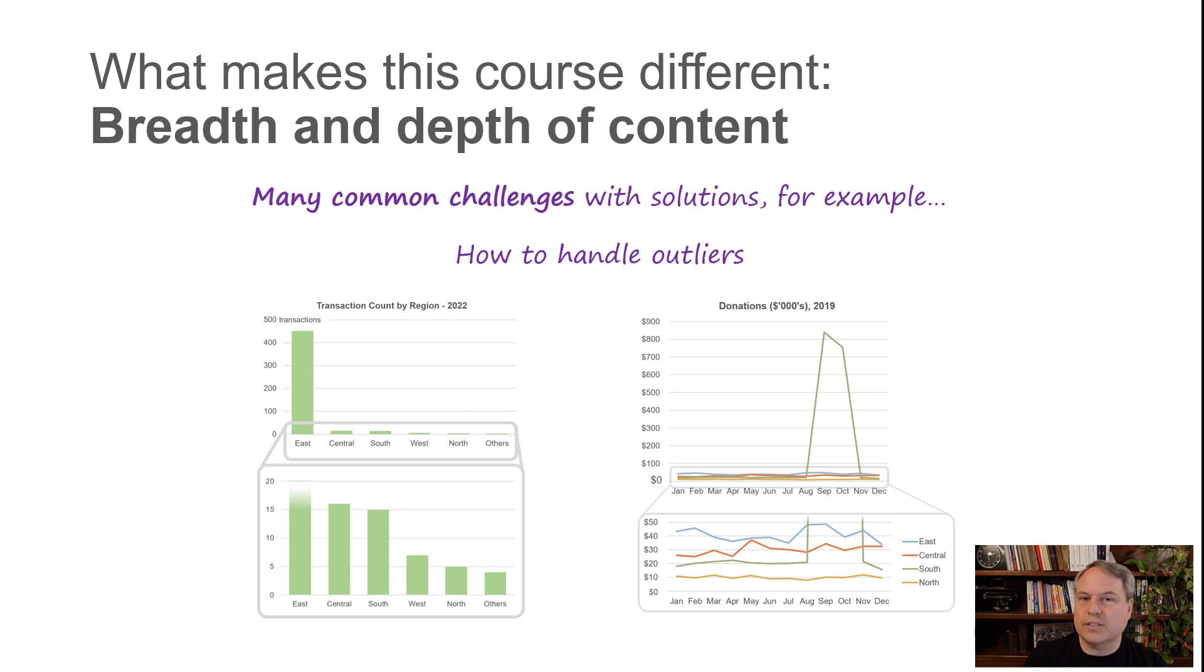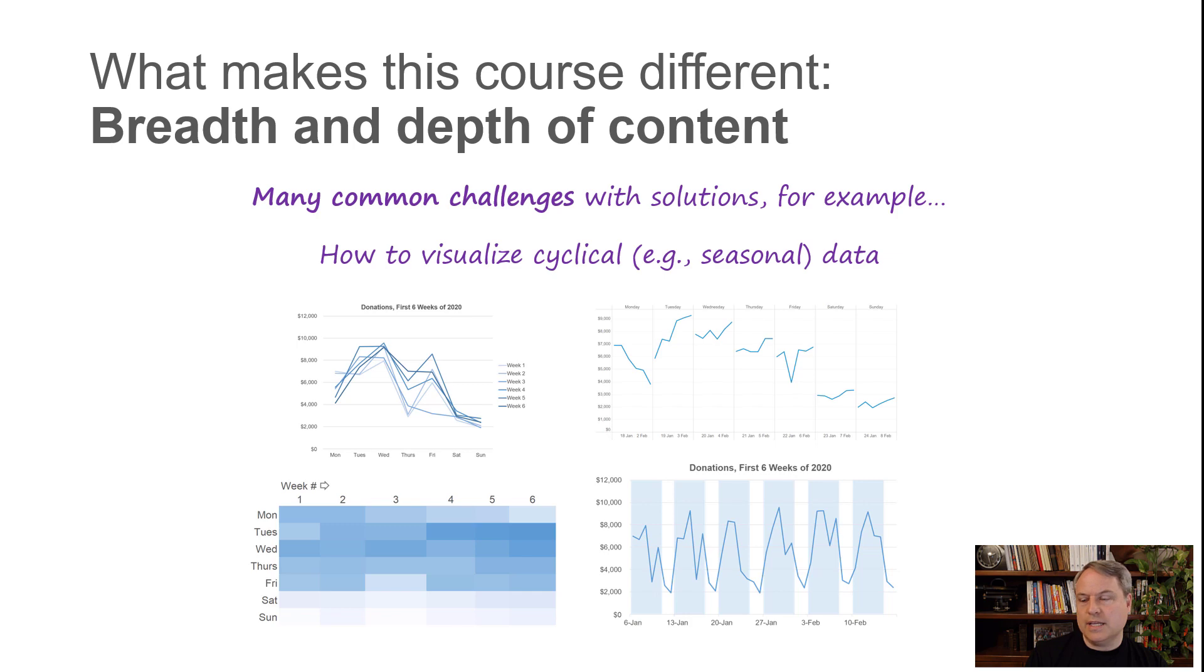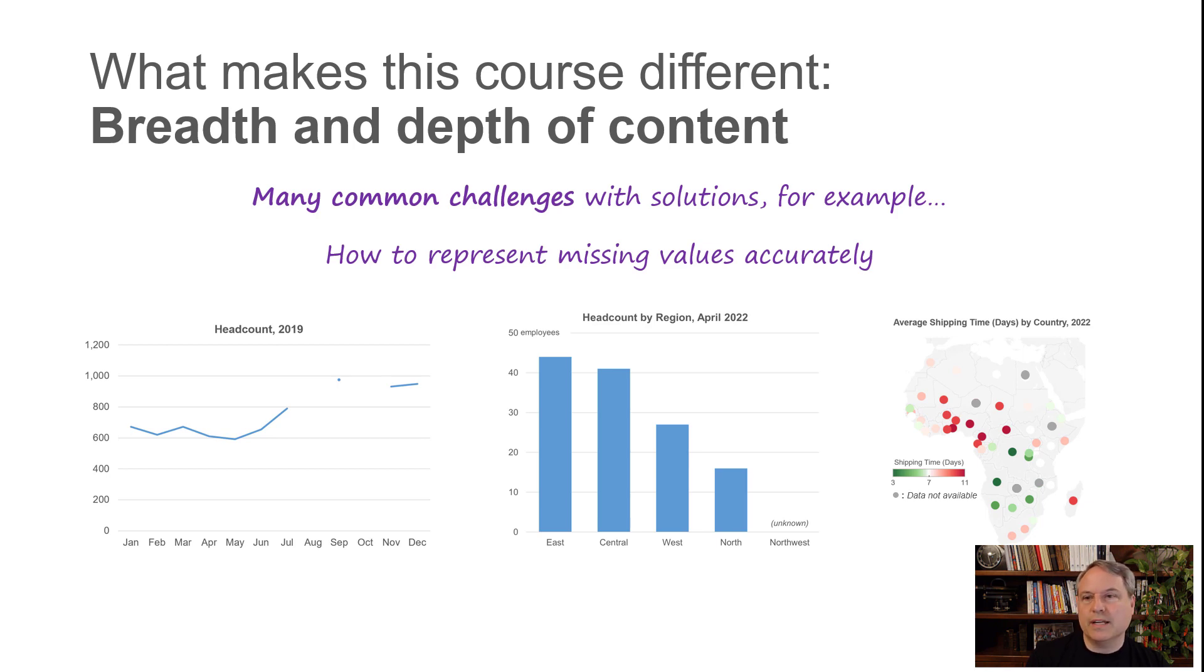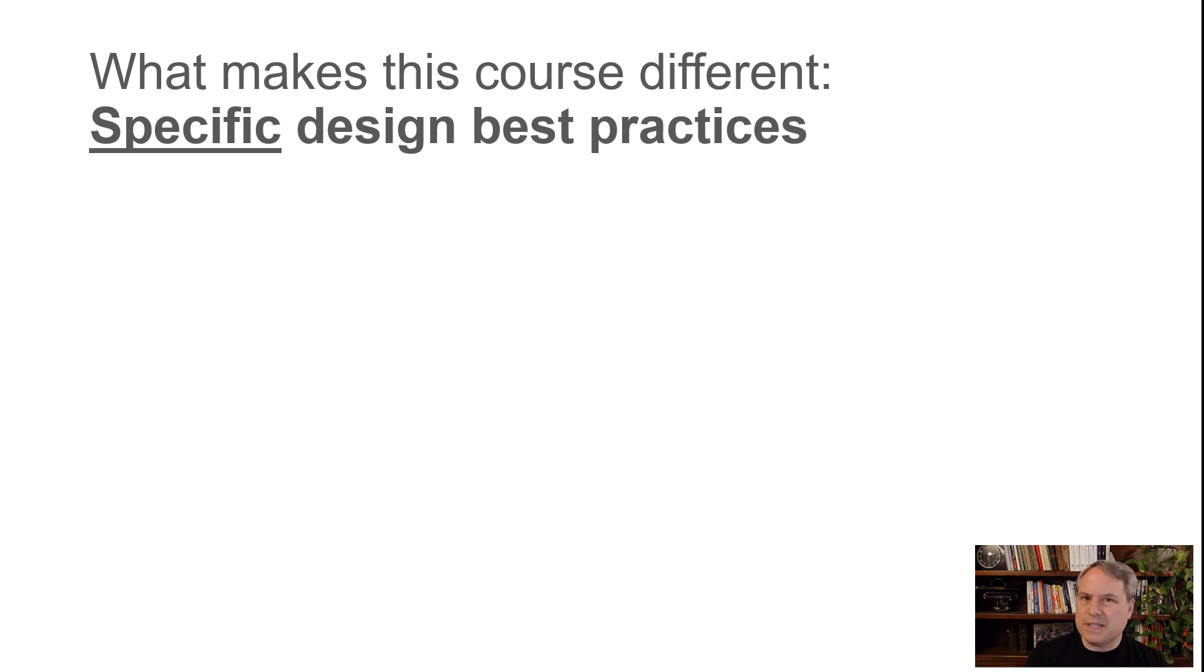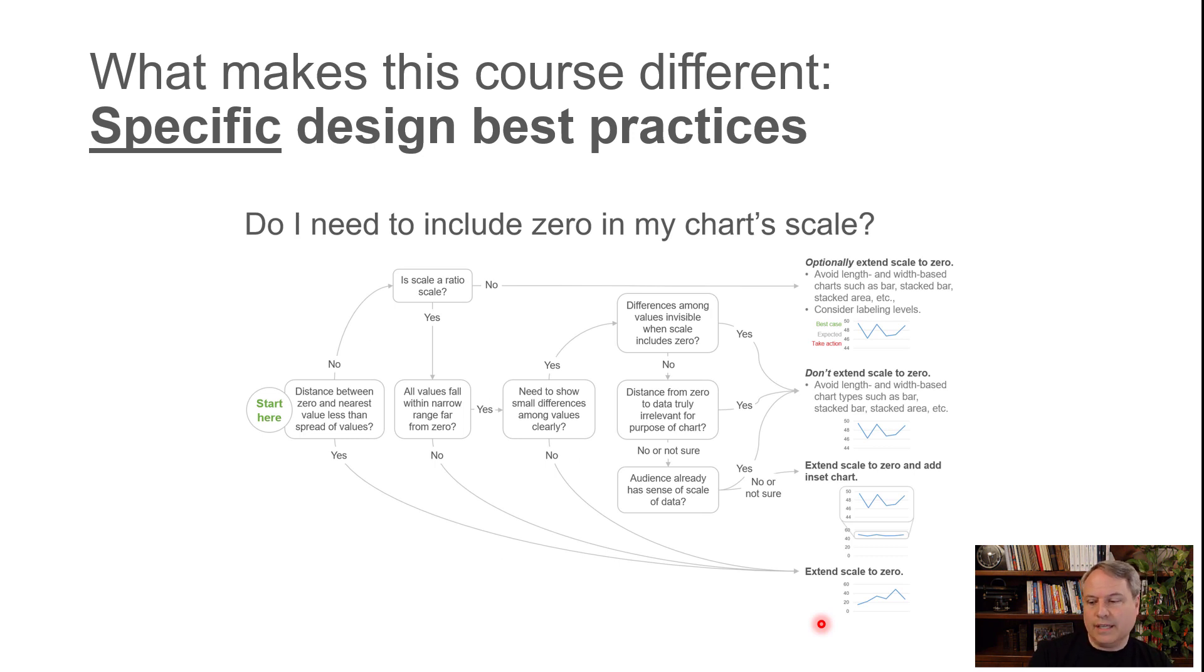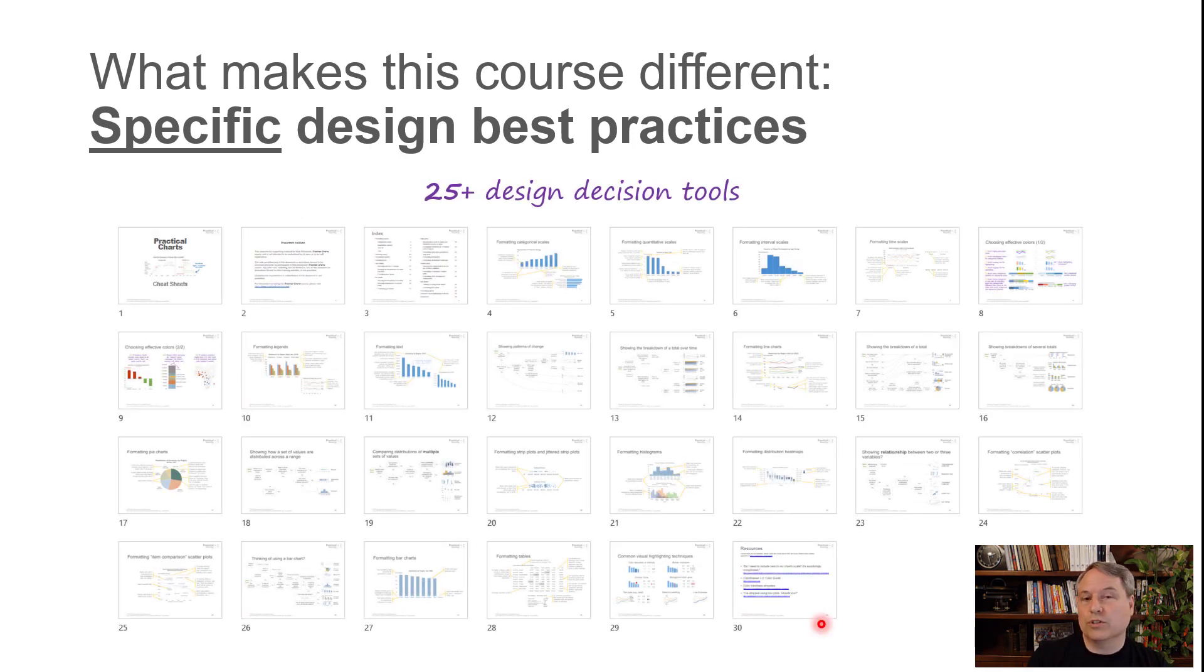Things like how to visualize outliers—this can be challenging until you know tricks like inset charts, which I'm showing here—or how to visualize cyclical data like seasonal data or data with weekly or monthly cycles, or how to represent missing values accurately. This is something people often don't get right and then accidentally misrepresent the data. The course also contains a lot of very specific best practices. For example, it can be tricky to decide when to use a pie chart versus other chart types when showing the breakdown of a total. There's specific guidance given so that for any given situation you can make the best possible design choice. Or when you need to include zero in your chart scale—this is a surprisingly tricky design decision that can really affect how people perceive the data. There's very specific guidance on how to make all these design decisions. In fact, there are over 25 of these design tools in the course.